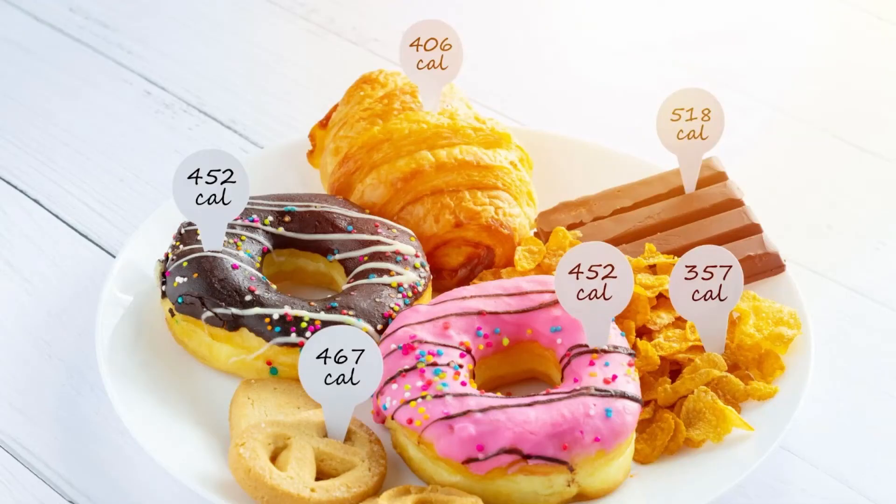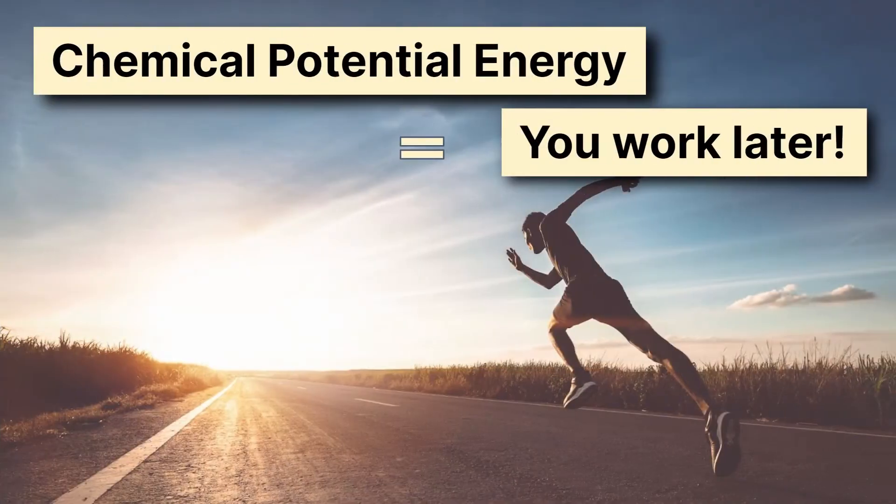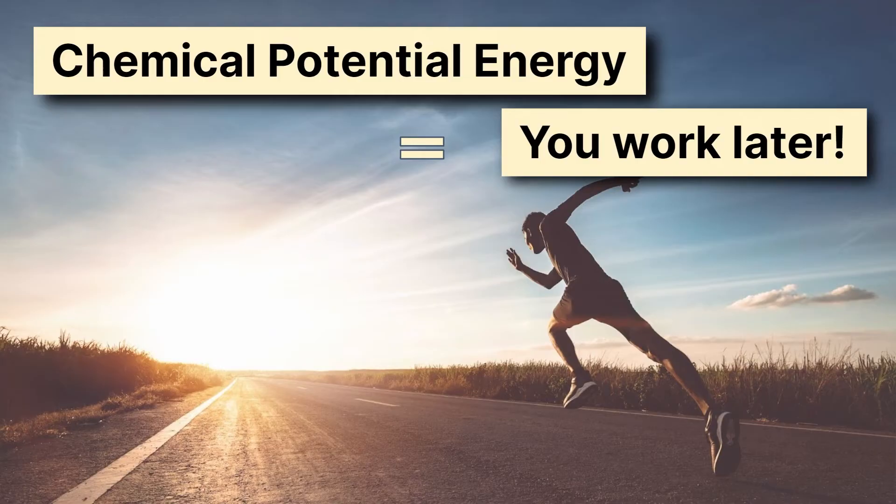One other category is chemical potential energy. It's really just a special type of potential energy, but it's one that connects with us very closely because calories measure chemical potential energy. So if I eat that delicious pink frosted donut, I'll get 452 calories and I can go do work with that. Chemical potential energy gives you the ability to work later. When you go for a run, you use chemical potential energy. If you ate that pink donut, you could run like four miles.